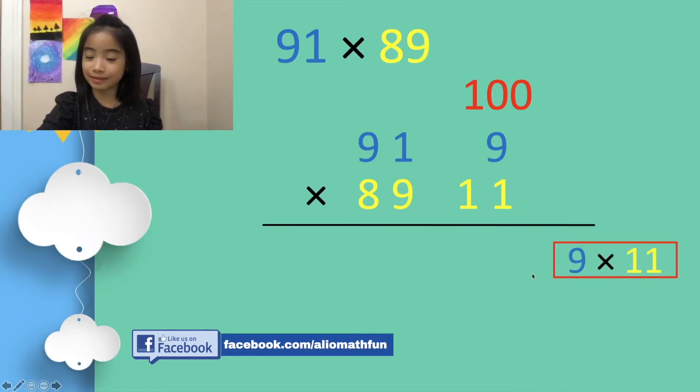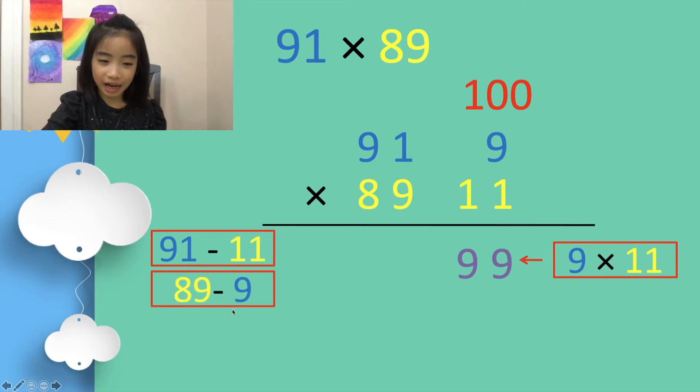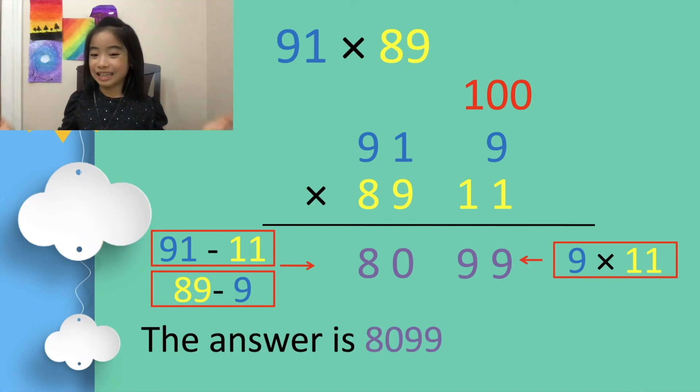Now, 9 × 11 equals 99. And if we switch the order, 91 minus 11 and 89 minus 9, they both equal 80. And voila! The answer is 8,099.